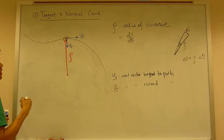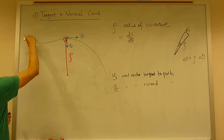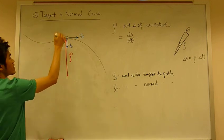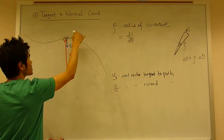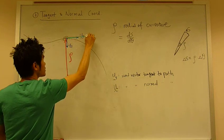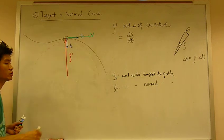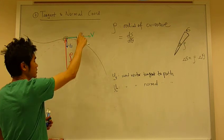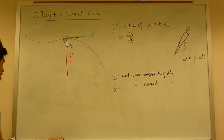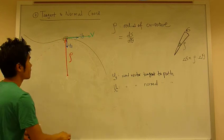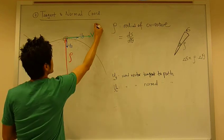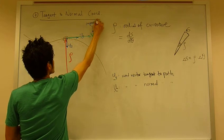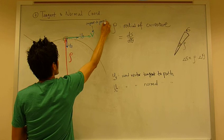Now, one thing to note is that this particle is traveling along this path right here. In any given instant in time, the velocity is always tangent to the path as well. Therefore, velocity is always in the direction of ut. It's always tangent to the path.